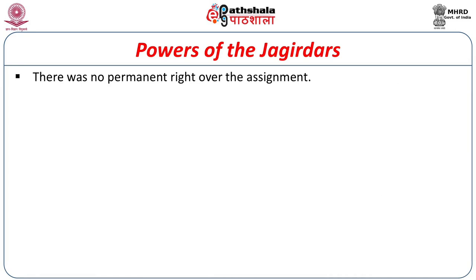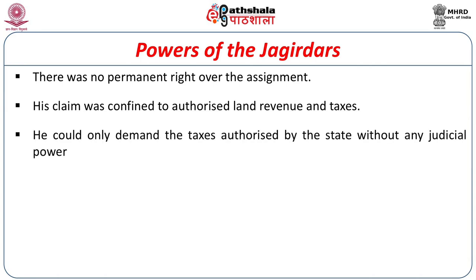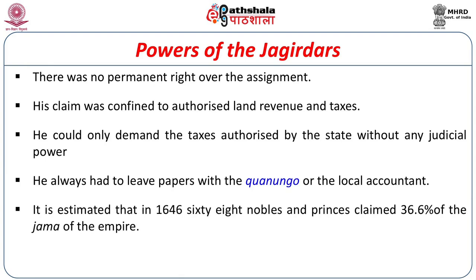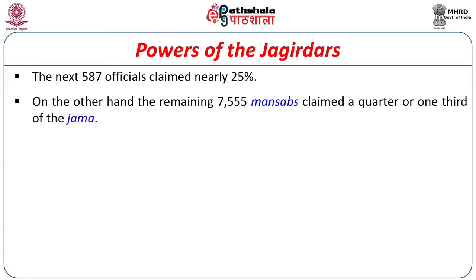What were the powers of the Jagirdars? There was no permanent right over the assignment. His claim was confined only to land revenue and taxes; he could only demand taxes authorized by the state, without any judicial power. He always had to leave papers with the Kanungos or local accountants. It is estimated that in 1646, 68 nobles and princes claimed 36.6% of the Jamma of the empire. The next 587 officials claimed about 25%.